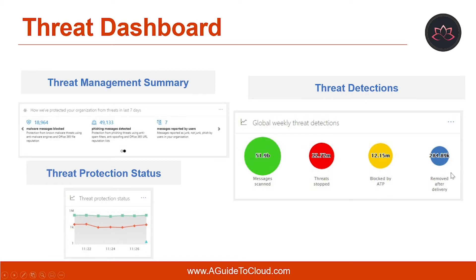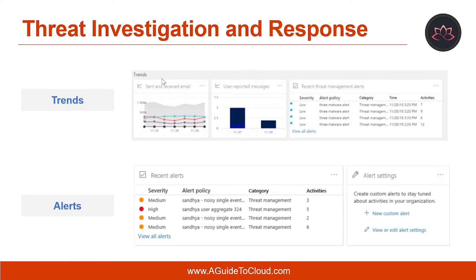And the last one is removed after delivery, calculated by the number of messages removed by Zero-Hour Auto Purge multiplied by the number of recipients. Now, let's understand threat investigation and response. If your organization's subscription includes Office 365 Advanced Threat Protection Plan 2, your security dashboard has a section that includes advanced threat investigation and response tools.